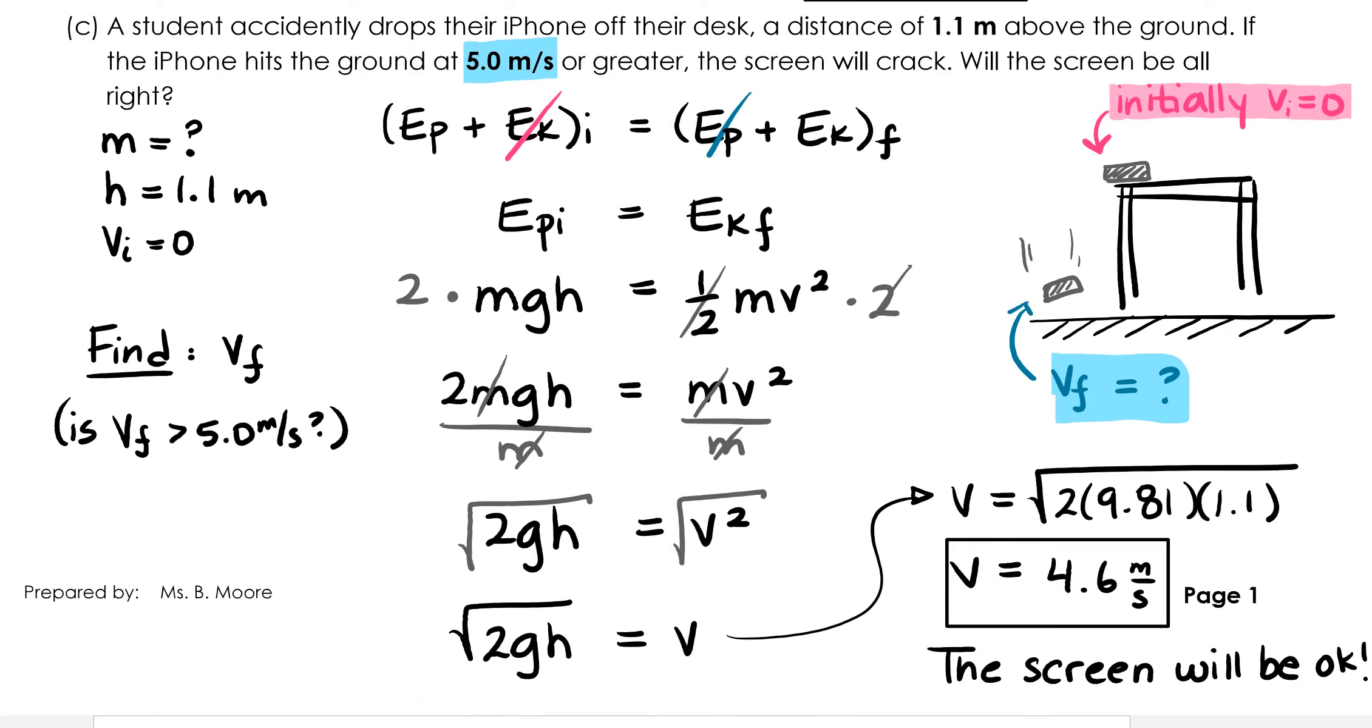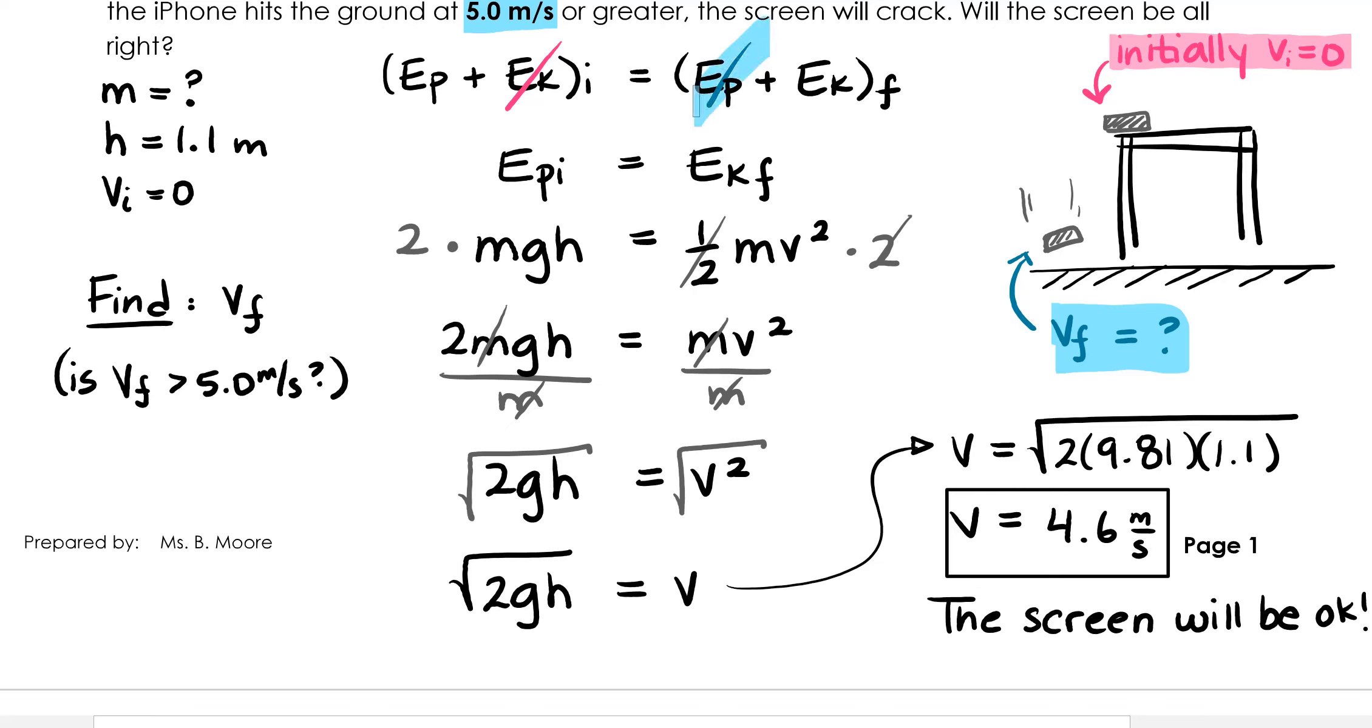Starting with our formula potential plus kinetic energy initially equals potential plus kinetic energy at the end or final, we're able to pare that down by saying the phone has no kinetic energy initially because it's sitting still on the table. And at the end, right before it hits the ground, H is basically zero, so it has no more gravitational potential energy. This gives us EP initial equals EK final. Go ahead and substitute in your formulas for each of these quantities and then algebraically isolate V or the speed of the iPhone. How fast is it going right before it hits the ground? 4.6 meters per second. The screen will be okay.